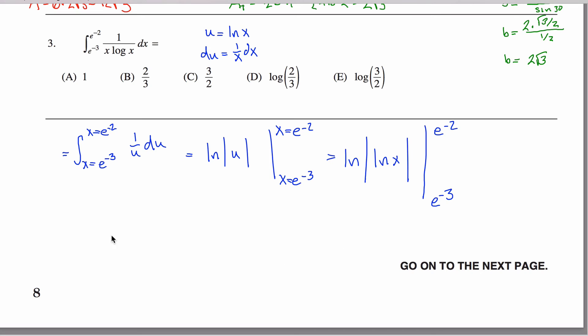So what does that look like? Well, let's see, I could plug stuff in. I got the natural log of the absolute value of the natural log of e to the negative two, and from that I want to subtract the natural log of the absolute value of the natural log of e to the negative third.